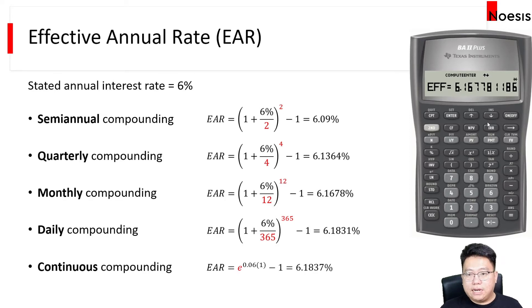For daily compounding, I will change that to 365, assuming that it's not a leap year, it's just a normal year. So that's 365 days a year, and that will be 6.1831% for daily compounding.